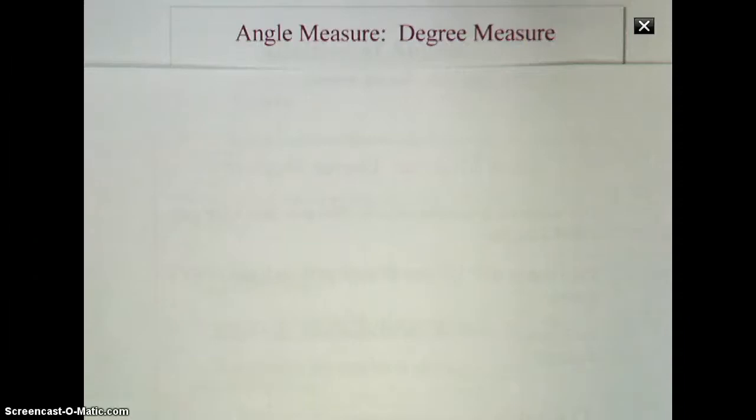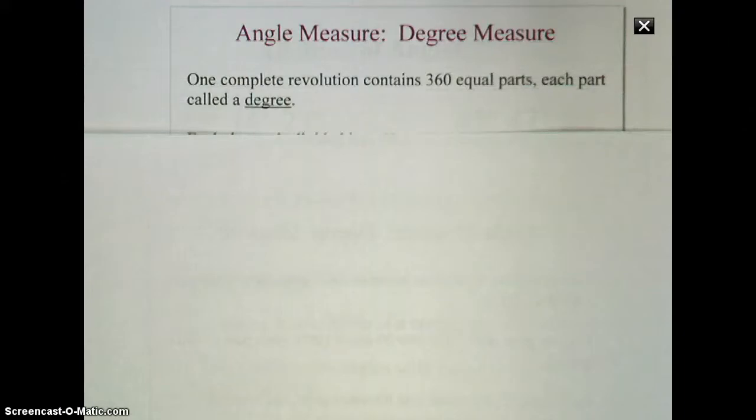This video is going to talk about how we measure with degrees, minutes, and seconds. One complete revolution contains 360 equal parts. Each part of this is called a degree. This is probably what you're familiar with in terms of measuring angles. 360 degrees completes one revolution, or that is a total number of degrees in a circle.